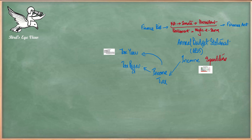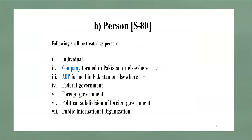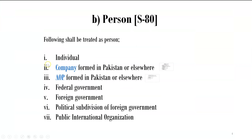The next thing you need to determine is the taxpayer. A taxpayer is a person who has to pay tax. The term 'person' is defined in the Income Tax Ordinance, and Section 80 lists seven types of persons: individual, company, AOP (Association of Persons), federal government, foreign government, political subdivision of a foreign government, and public international organizations. Among these, the three main types whose incomes are subject to tax are individual, company, and AOP.